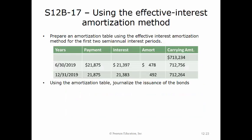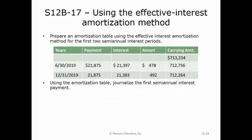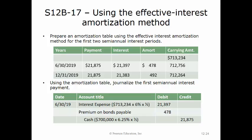To journalize the issuance of the bonds on December 31st, 2018, we debit cash for $713,234 and credit premium on bonds payable for $13,234—the difference between cash received and the $700,000 face amount—and credit bonds payable for $700,000. To record the first semi-annual interest payment on June 30th, 2019, we debit interest expense for $21,397, debit premium on bonds payable for $478, and credit cash for $21,875.